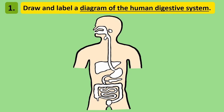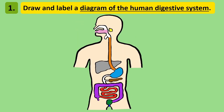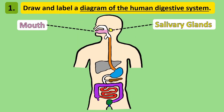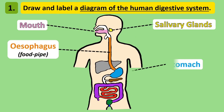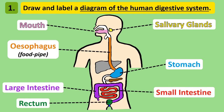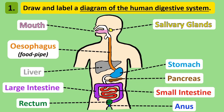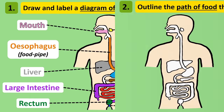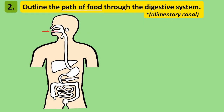Practice drawing this diagram into your copy and make sure to add the labels correctly, which we'll colour code on screen now. The labels you need to know are the mouth, salivary glands, oesophagus, stomach, small intestine, large intestine, rectum, anus, liver and pancreas. And you can trace the pathway that food takes through your digestive system, which is sometimes called the alimentary canal.